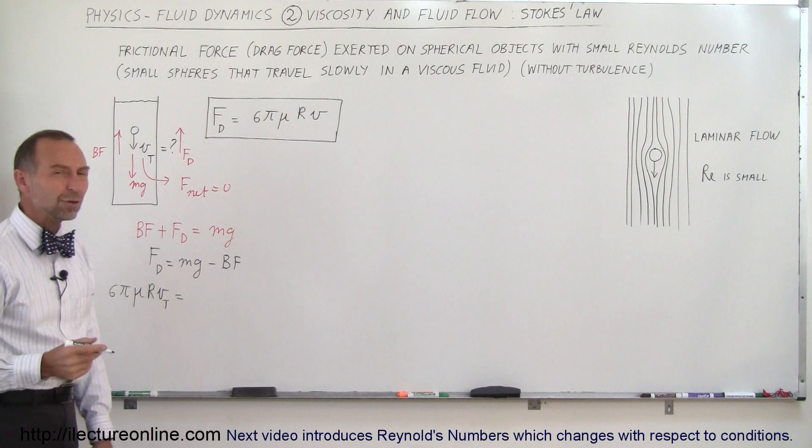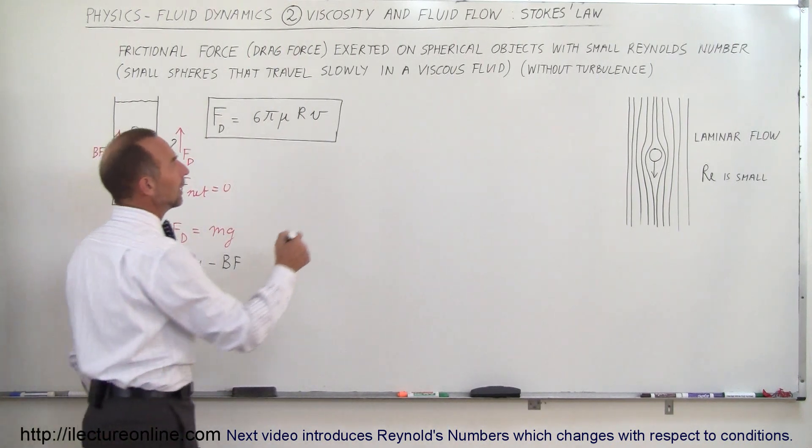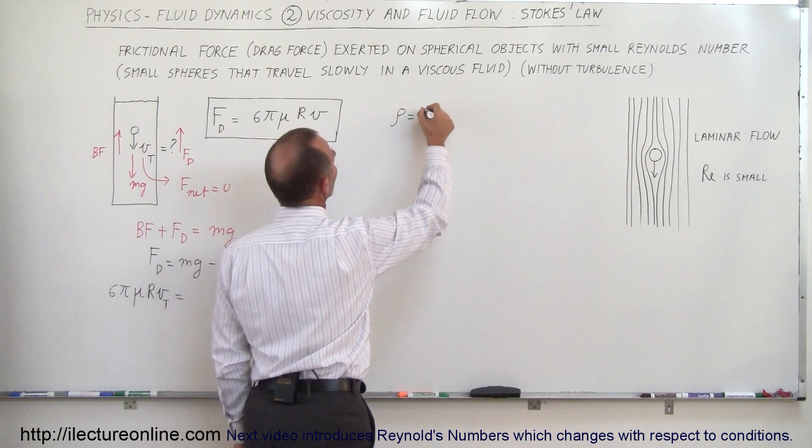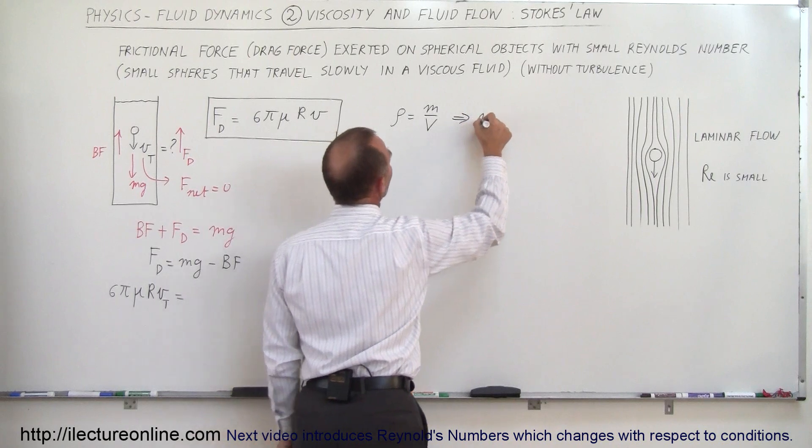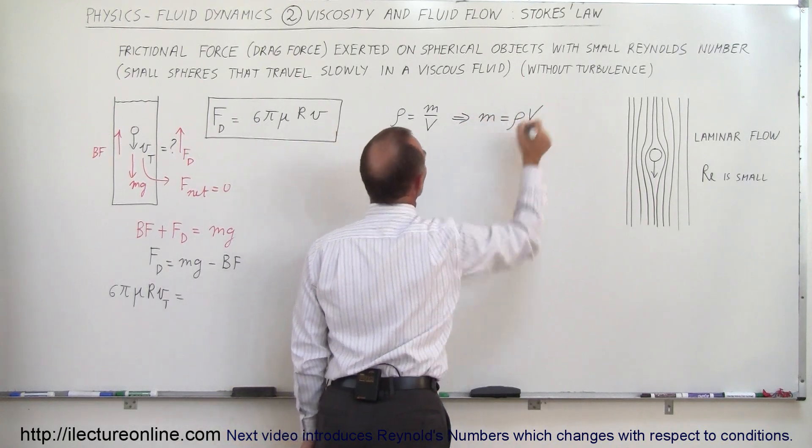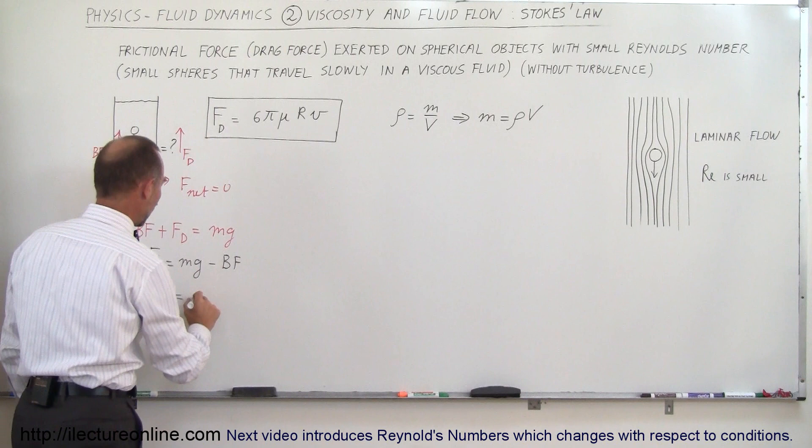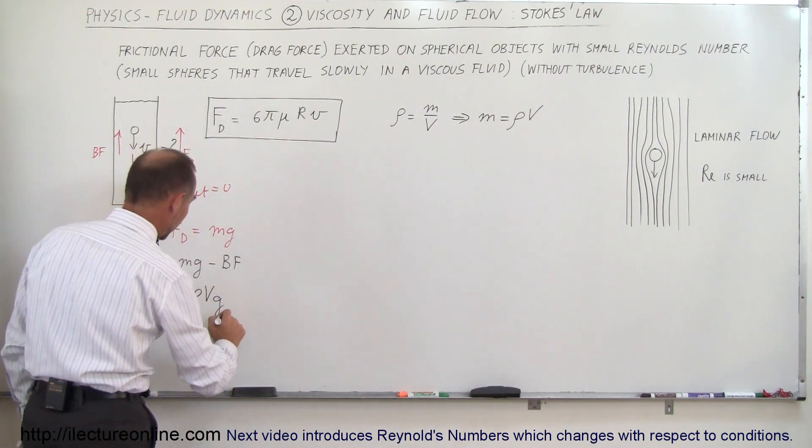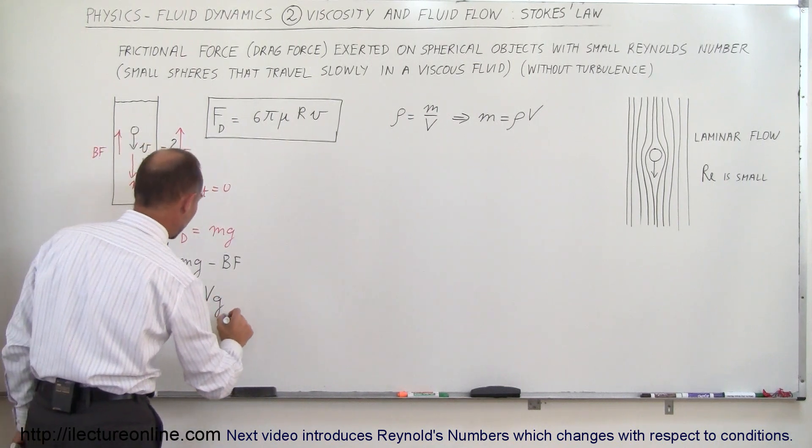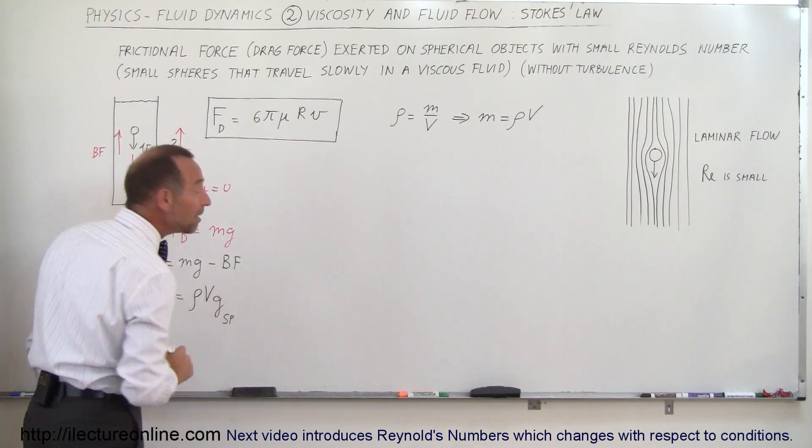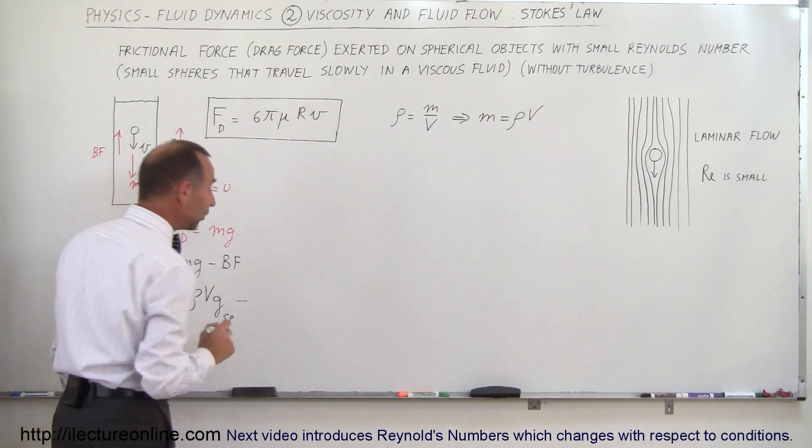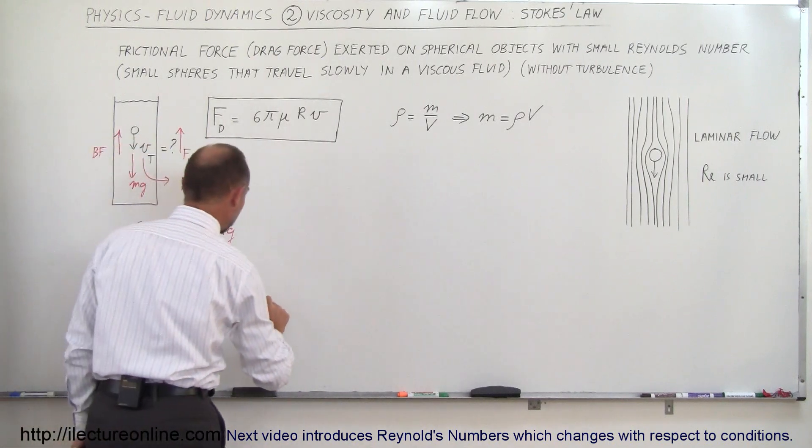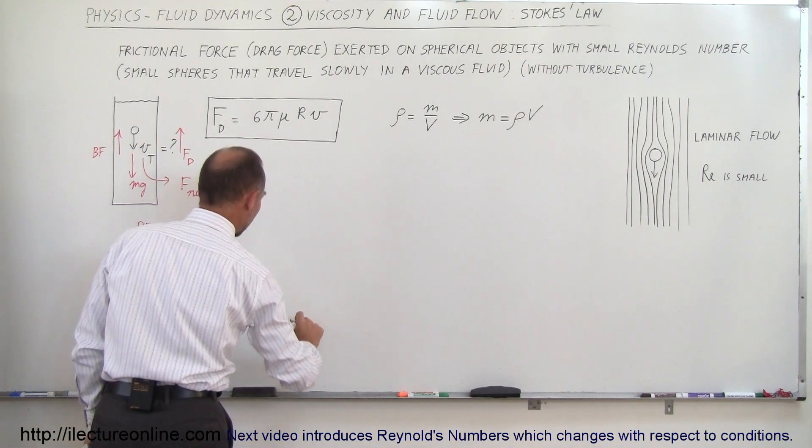The weight is mg, but we want to convert the weight into something we can relate to. We know that the density of an object is equal to the ratio of the mass divided by the volume, which means that the mass can be written as the density times the volume. So in this case, instead of mass, we can write ρVg of the sphere minus the buoyancy force, and of course the buoyancy force is equal to the weight of the displaced liquid. In that case, that will be the ρVg of the liquid.